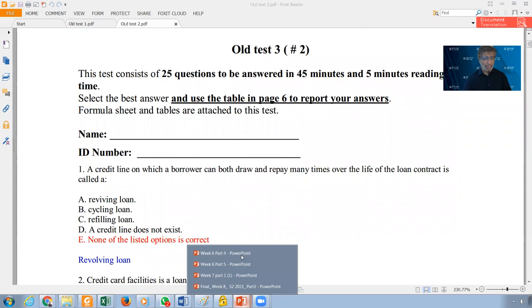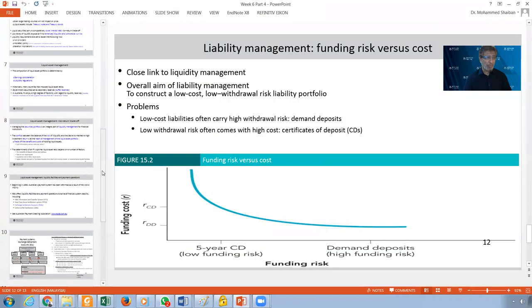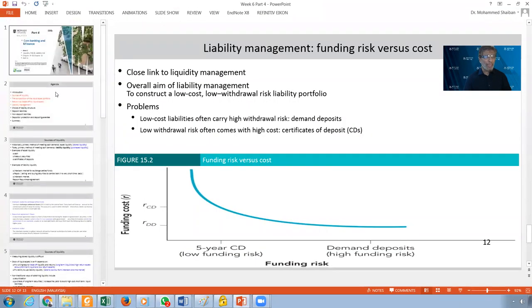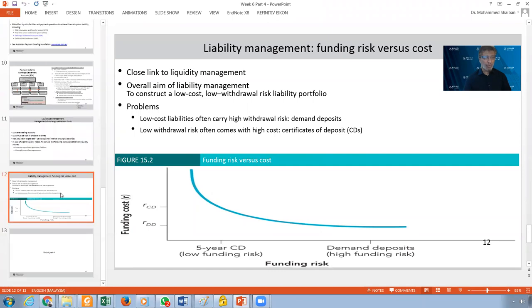In week six, which is liquidity, this is part four. Ignore completely part four, except for this slide. Now this slide is talking about something important for us, which is the funding cost against the funding risk. And it's very interesting issue when we talk about the CDs and the demand deposit. So you look at this slide and get the concept of the trade off between these two issues, which is the funding cost and the funding risk.